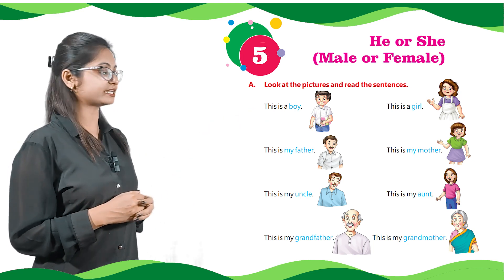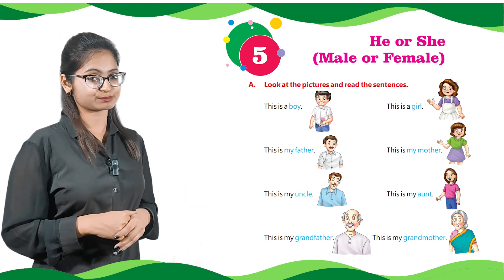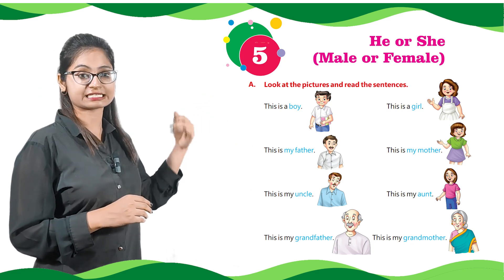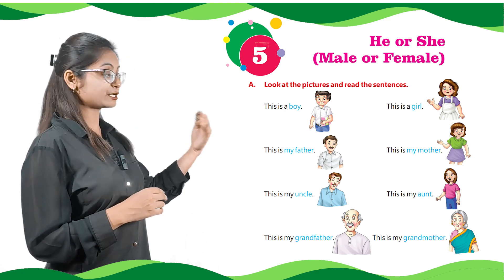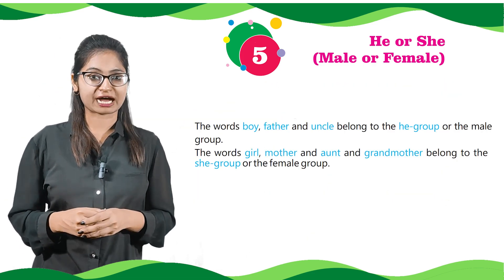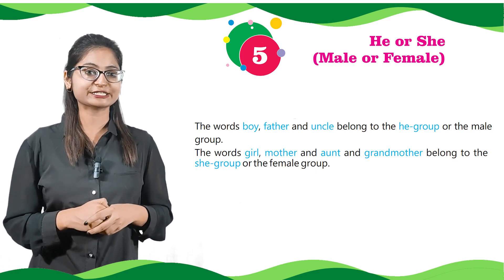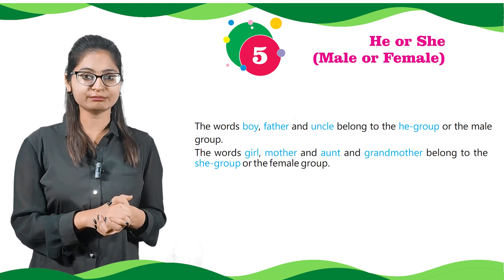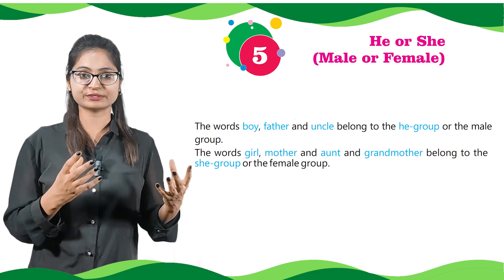Next, we have a picture and written: this is my uncle. And the next picture is: this is my aunt. Before the next picture there is a sentence: this is my grandfather. And for the next picture we have: this is my grandmother. The words boy, father and uncle belong to the he group or the male group. The words girl, mother, aunt and grandmother belong to the she group or the female group.